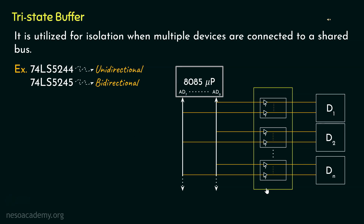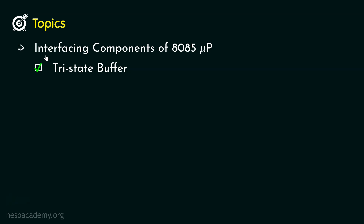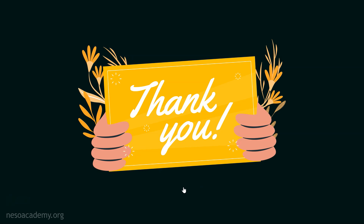So that is all about the tri-state buffer. Do remember: the main purpose of the tri-state buffer is to provide isolation when multiple devices are connected to a shared bus. In this session, from all the different interfacing components of the 8085 microprocessor, we learned about the tri-state buffer. In the upcoming sessions we are going to learn about the remaining interfacing components. Thank you all for watching.